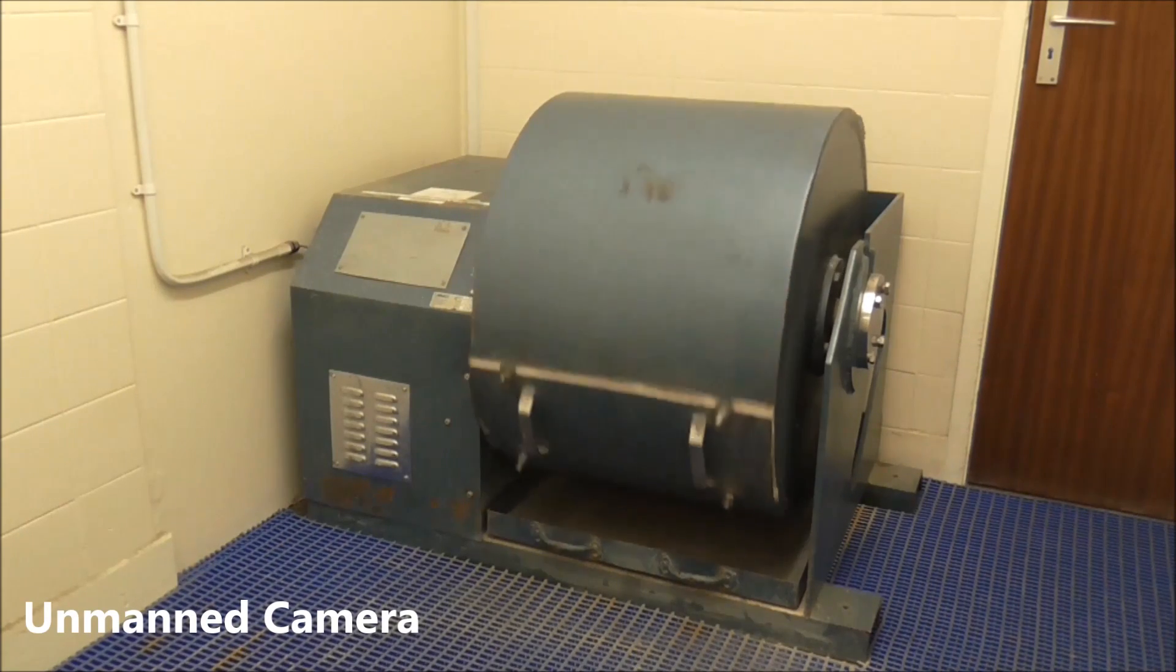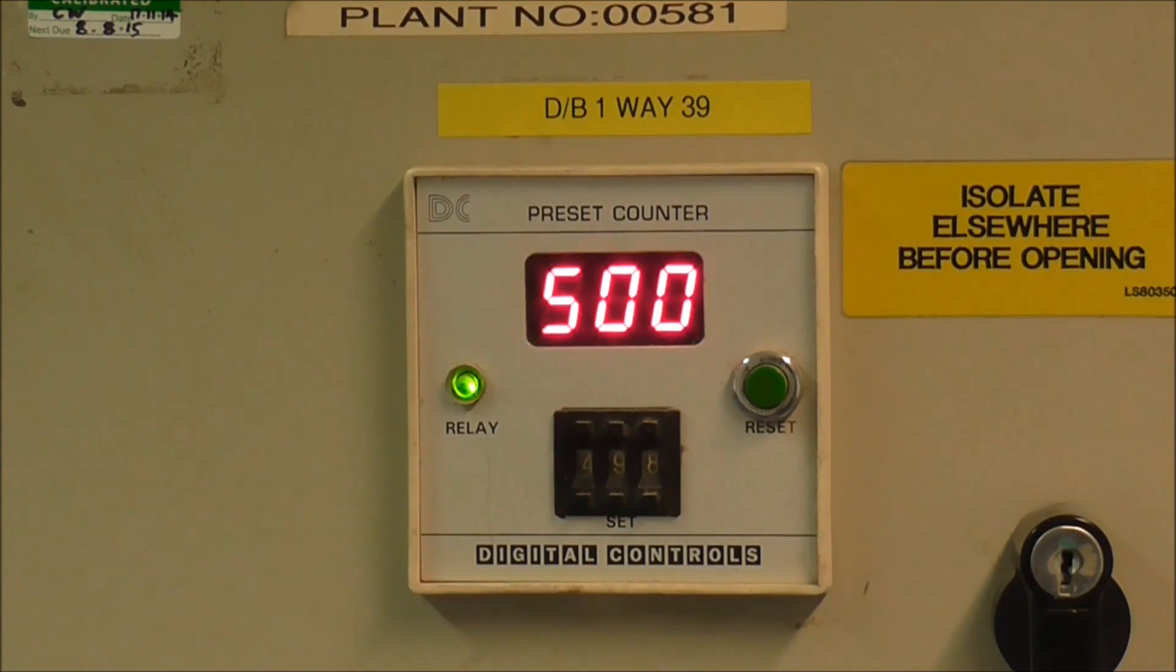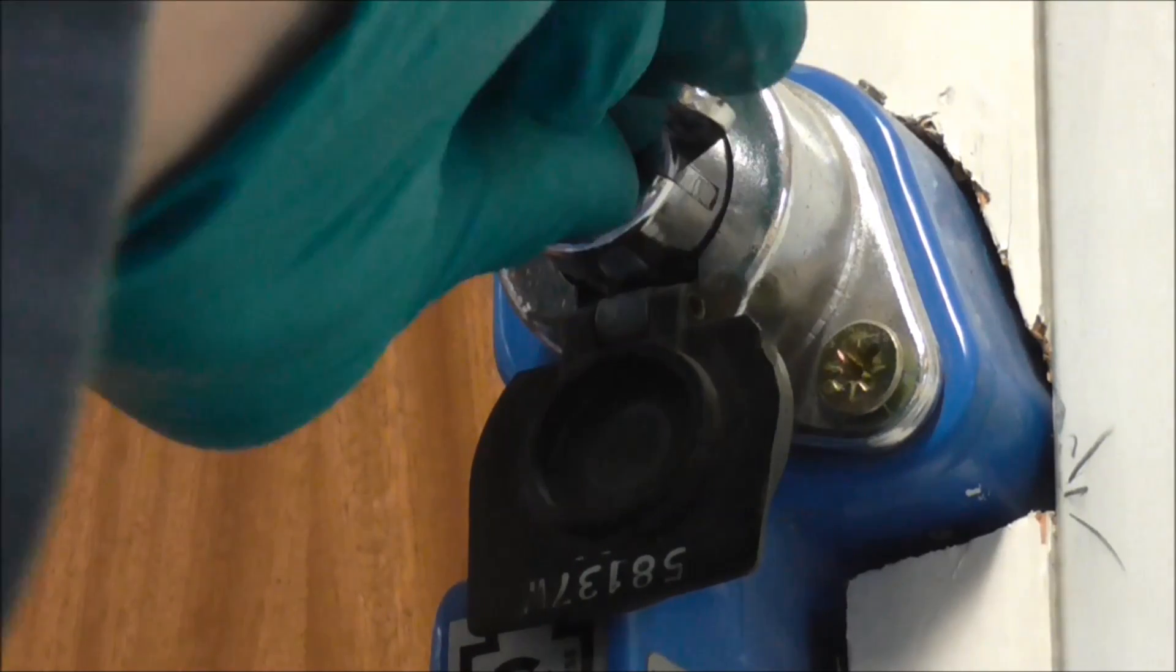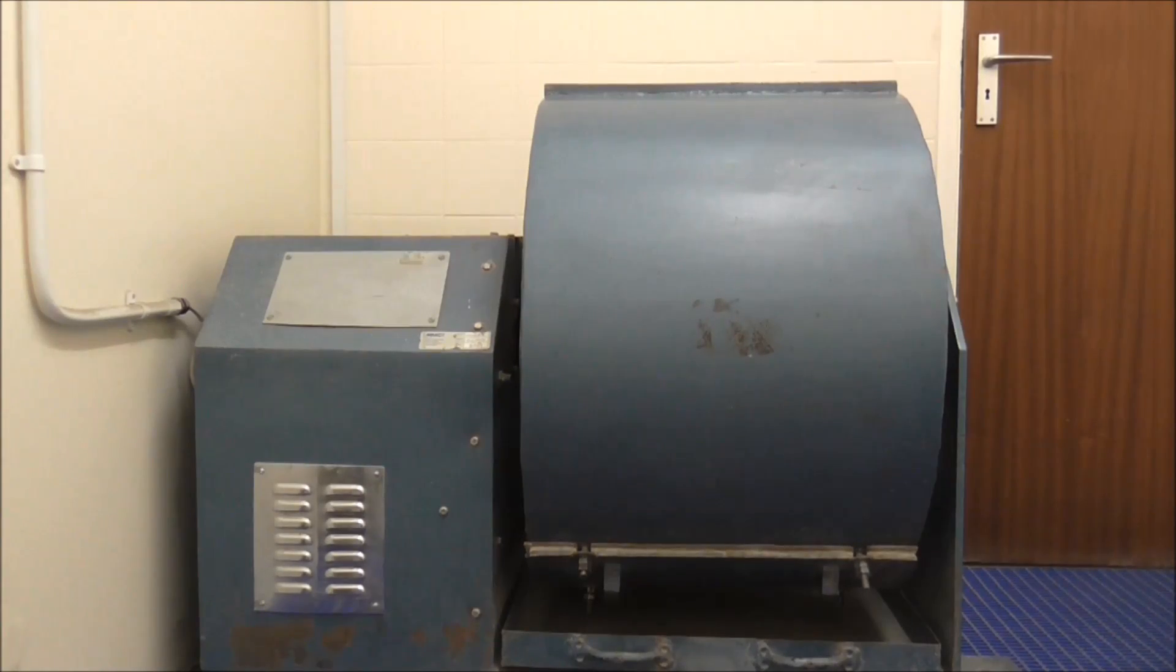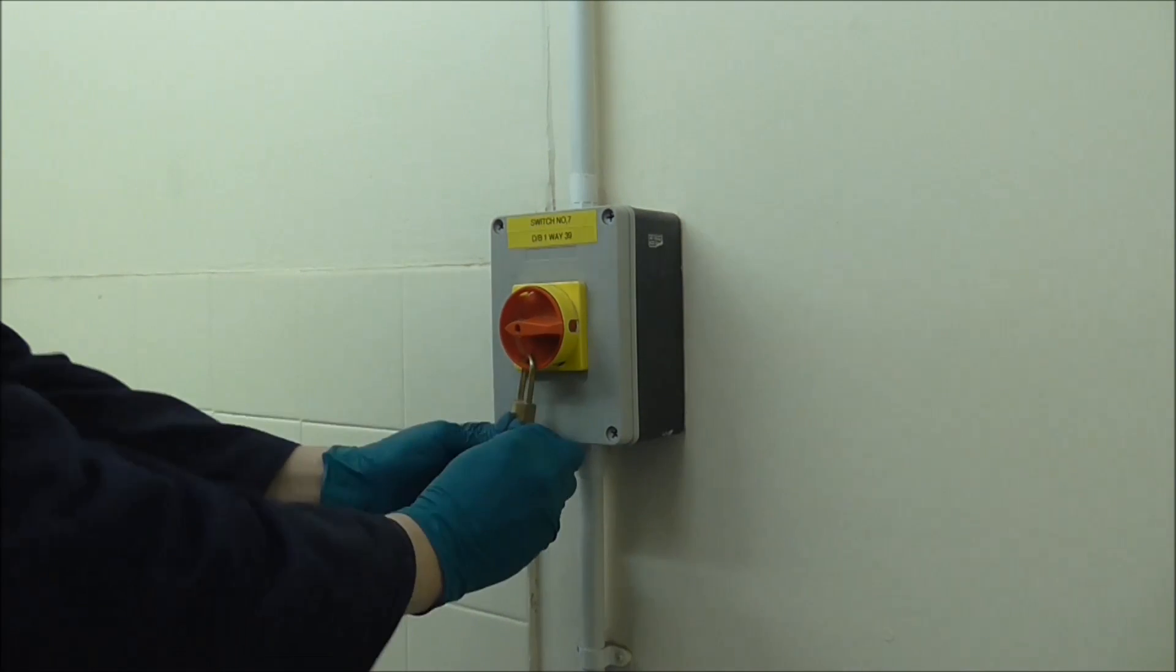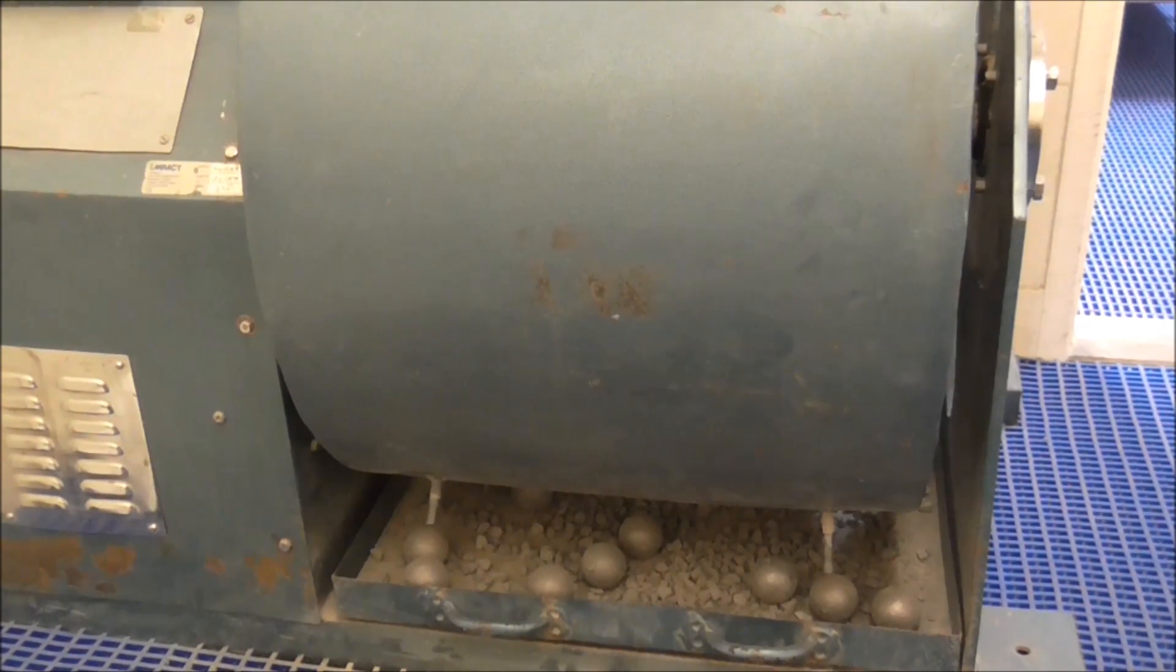Therefore, it takes about 15 minutes for the drum to complete the 500 revolutions. On completion, the key is removed from the control box, the door is unlocked, and the operative re-enters the room. The power is turned off. The front cover of the drum is then unbolted and removed. The contents of the drum are then carefully discharged into the tray beneath. All aggregate from inside the drum must be removed.